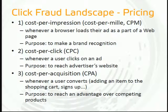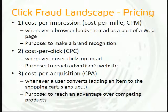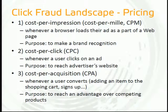There are three main types of reward models. The first is Cost Per Impression, charged whenever a browser loads an ad as part of a web page — the main purpose is brand recognition. The second is Cost Per Click, charged whenever a user clicks on an ad with the purpose of reaching the advertiser's website. The third is Cost Per Acquisition, charged whenever a user performs a predefined action like adding an item to a shopping cart or filling out an online form.